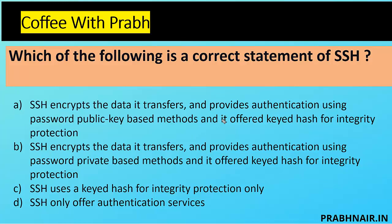Which of the following is the correct statement of SSH? Option A: SSH encrypts the data it transfers — true — provides authentication using a password or public key-based method — also true — and offers a keyed hash for integrity protection — true. Option B: SSH provides authentication using a private-based method — there is no such thing called a private-based method — so B is eliminated. Option C: SSH uses a keyed hash for integrity protection only — not true, because SSH is used for remote administration and the channel established between client and server is encrypted. Option D: SSH only offers authentication services — also not a true statement.